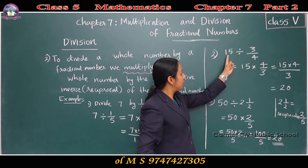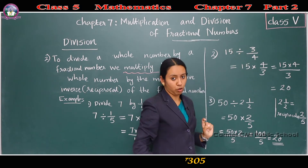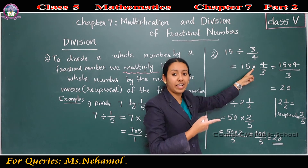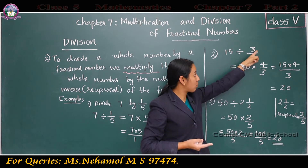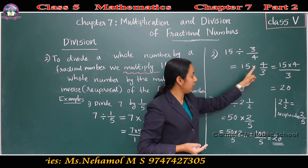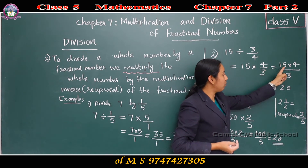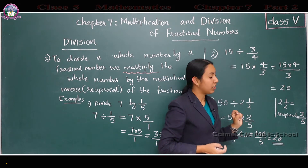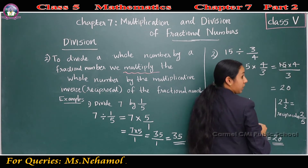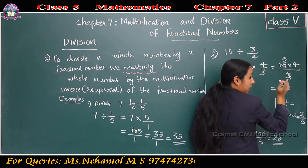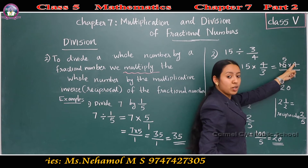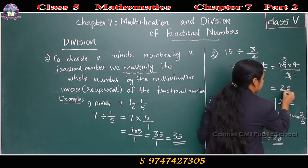Next example: 15 divided by 3/4. One whole number, one fractional number. So 15 into the reciprocal of 3/4. The reciprocal of 3/4 is 4/3. 15 into 4/3. We know 15 is divisible by 3: 15 by 3 is 5, and 3 by 3 is 1. So 5 into 4 by 1. 5 fours are 20. The answer is 20.